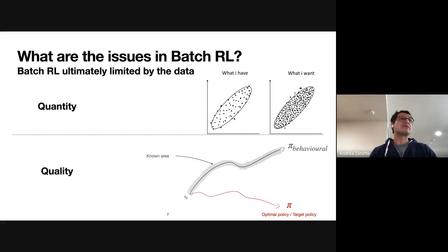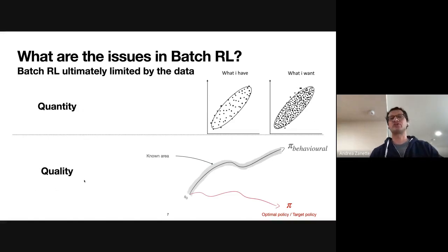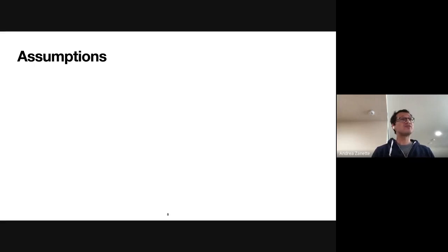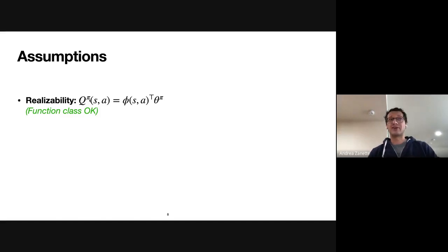In this work, we want to bypass those issues and ask: assuming the most favorable conditions — no misspecification in your predictor, very large quantity of data, and the best possible quality — what can we do with batch RL entirely offline? To do this, we place very strong assumptions. The first is realizability: we assume the function class can correctly represent the target policy or the optimal value function. We also assume that for any state and action, you observe the full reward and transition function.